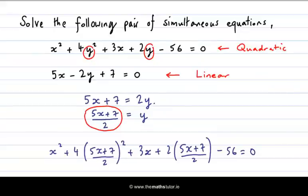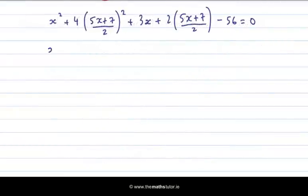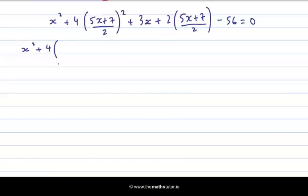So writing that out, I get... And now I will multiply out the brackets and solve the resulting quadratic equation. When I multiply this out, I get x squared plus 4 times and I need to square what's inside the brackets. So I need to square the top of my fraction and the bottom. When I square the top,